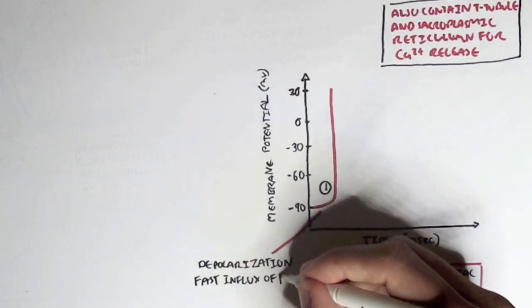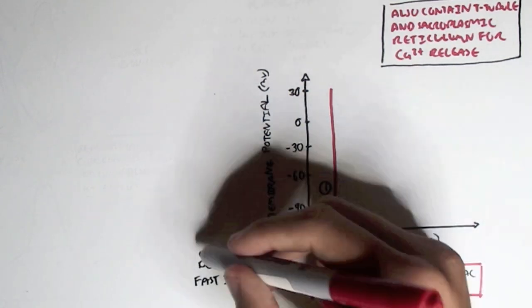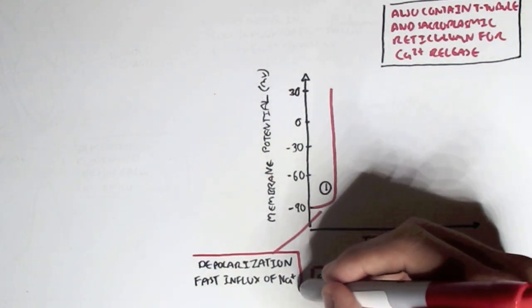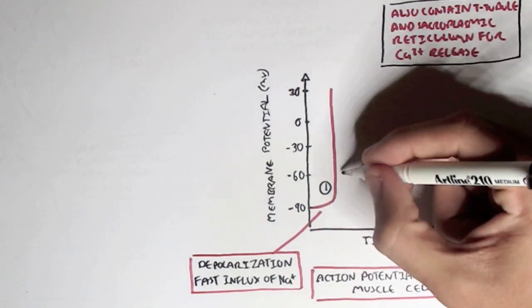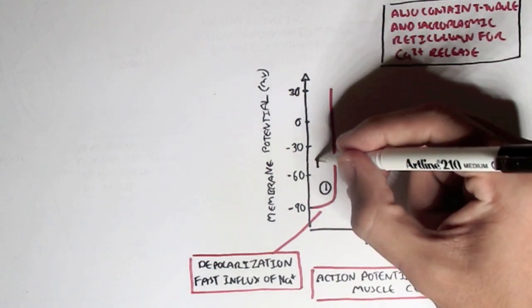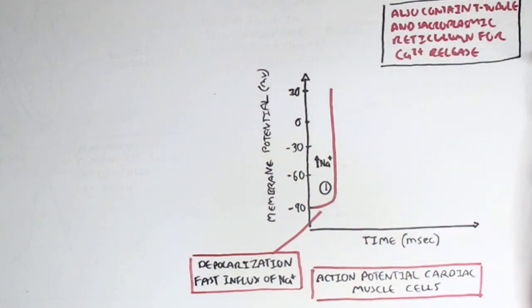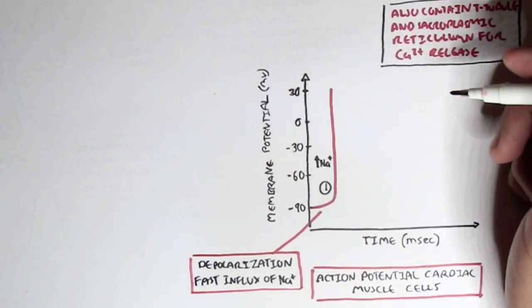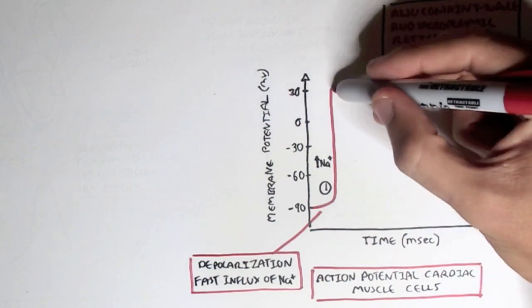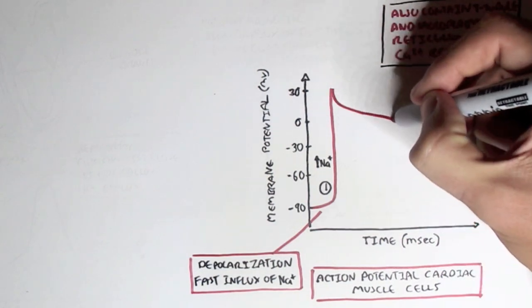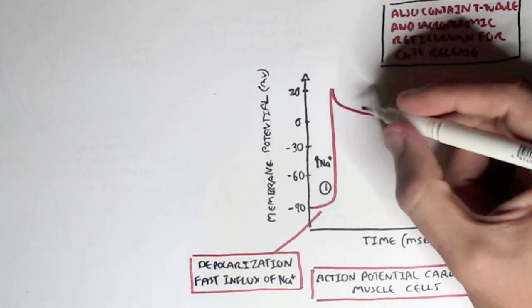During depolarization, we have a fast influx of sodium ions from the outside to the inside, which changes the membrane potential to become more positive. The depolarization does not go past positive 30 — this is the peak.